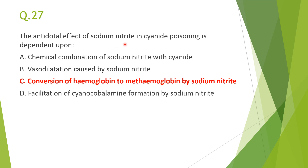Next: antidotal effect of sodium nitrate in cyanide poisoning is dependent on — answer C: conversion of hemoglobin to methemoglobin. Sodium nitrate converts hemoglobin to methemoglobin, which has high affinity for cyanide radical, forming cyanmethemoglobin. Then sodium thiosulfate can be given to make it more soluble. The key mechanism is the conversion of hemoglobin to methemoglobin.